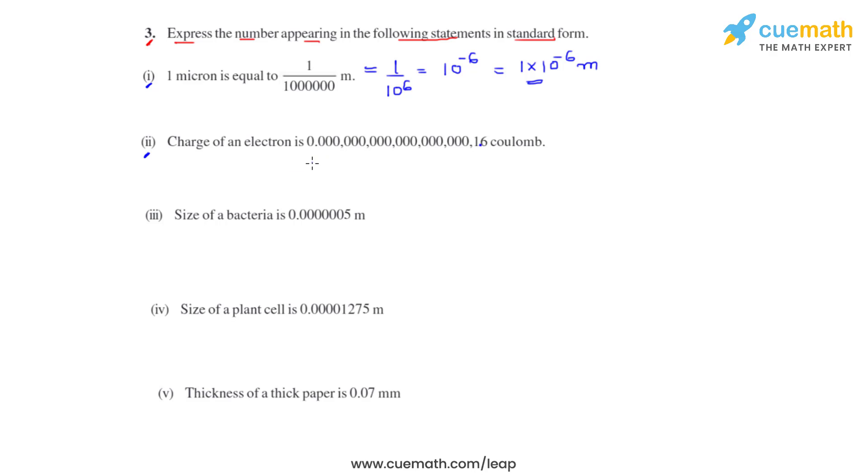On counting, we have to move the decimal point by 19 places towards right. This can be written as 1.6 times 10 raised to negative 19 coulomb, because when the decimal moves towards right, the number of places by which it moves is subtracted from the power of 10. This is the standard form for the second bit.